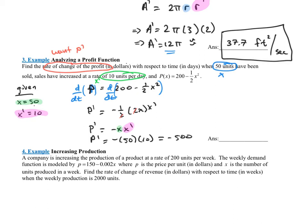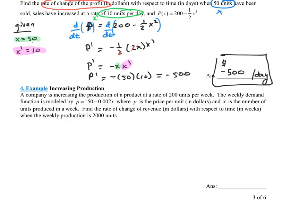Since this is an applied problem, we need units. The rate of change is negative 500 dollars per day. This means their profit is decreasing by $500 over that next day — specifically at the moment when 50 units have been sold. This isn't the profit itself; it's saying profit is changing by losing $500 per day. If you're a company, that means something's going wrong.